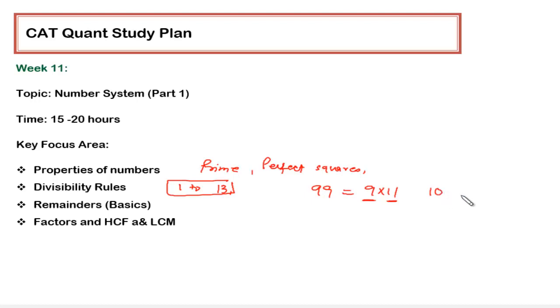This is the basic thing from divisibility rule. Apart from that, you have to do divisibility rules of any number which are in the form of 10 to the power n plus minus 1. The n could be any natural number. For example, you have to find the divisibility rule for 1001, 101, or 1999. These rules have already been given in the theory books. So 1 to 13 and the numbers which are in this particular format, these are the only numbers which you have to focus.